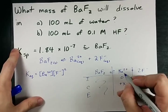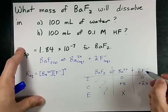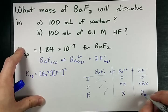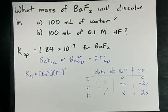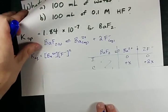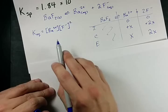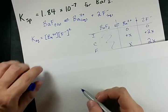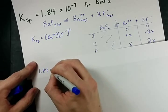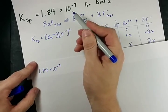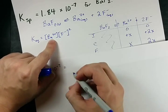So my equilibrium concentration of Ba2+ is going to be x and my equilibrium concentration of F minus is going to be 2x. This calls for an equation to solve. I need to plug these equilibrium concentrations into my Keq.